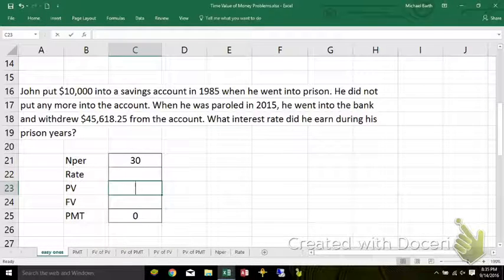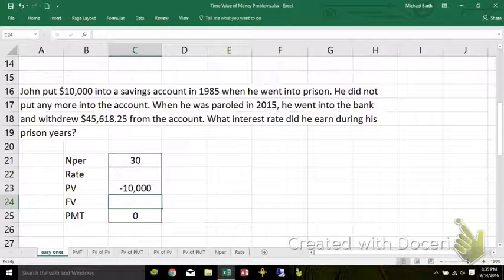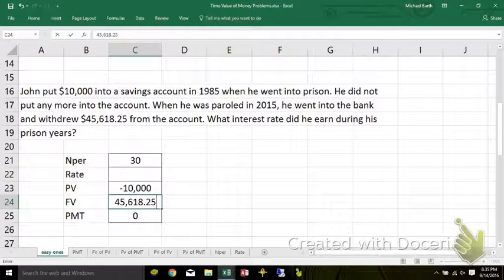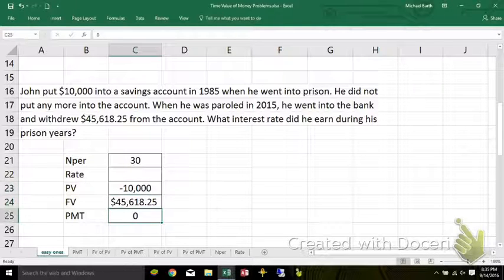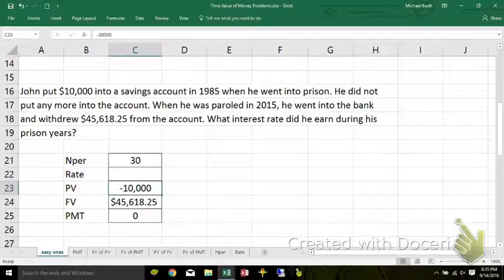He put $10,000 out of his pocket. And then in 2015, he put $45,618.25 back in his pocket. Now remember, you always got to have a positive, a negative, and then the third number, it just depends. We'll see examples where it's positive or negative.